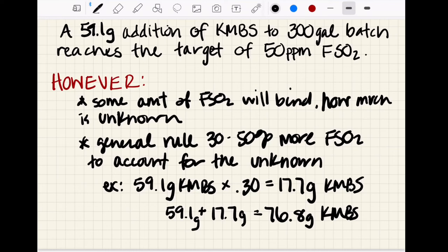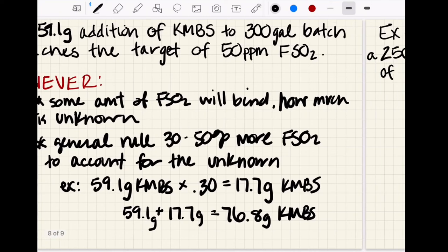After we make this addition, you probably want to wait around 24 hours or so and you want to measure to see what you end up with because you want to make sure that you've hit your target. Then you can kind of see maybe how much bound, and if you are still somewhere near that target free SO2 for the pH of your wine.